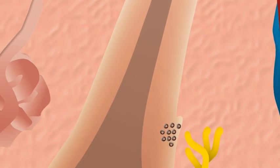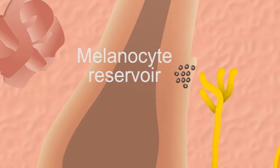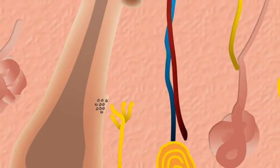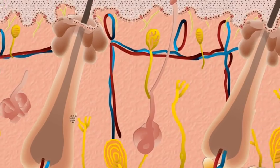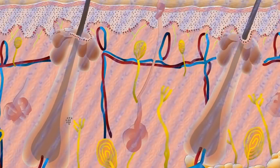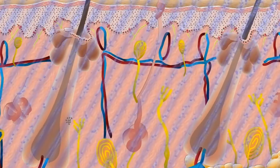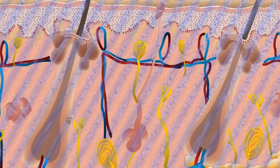Within hair follicles, one finds a melanocyte reservoir containing melanocyte stem cells. These melanocytes can be activated to maturity with the assistance of frequent doses of phototherapy, to give off a powerful signal to start the process of repigmentation in the skin of vitiligo patients.